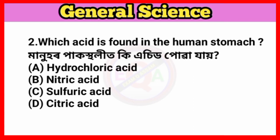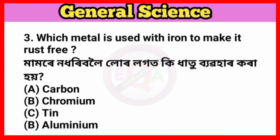Question number two: Which acid is found in the human stomach? Question number three: Which metal is used with iron to make it rust free?